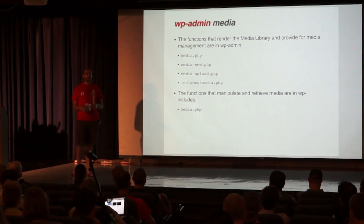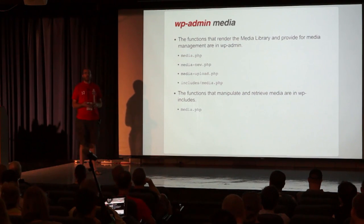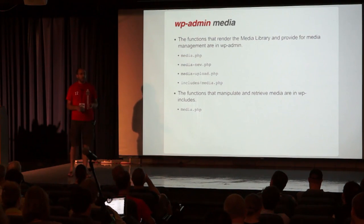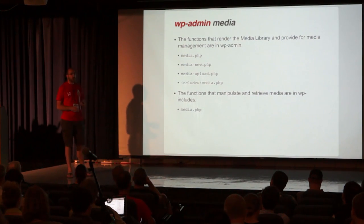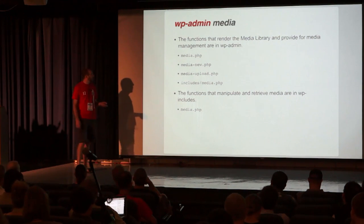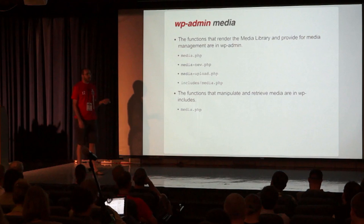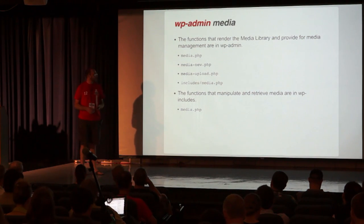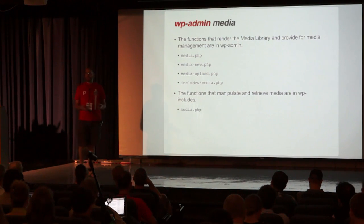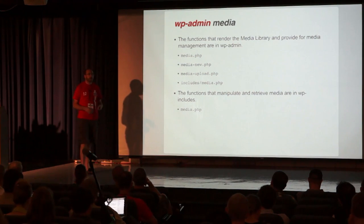Using media as an example: all of the functions that you interact with to upload media, crop an image, add alt tags, change the title of an image — those are all within includes/media. When you do the uploading, you're in wp-admin/media-view or media-upload, or media.php if you want to look at things you've already uploaded. The functions for resizing and showing images on the front end are in wp-includes/media. So again, really just emphasizing how things are separated.